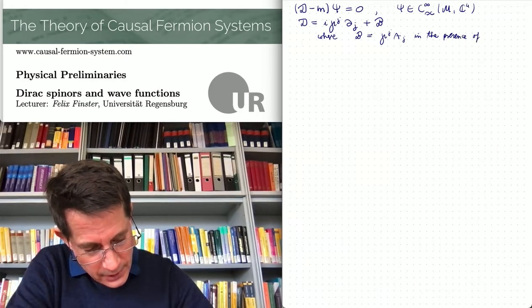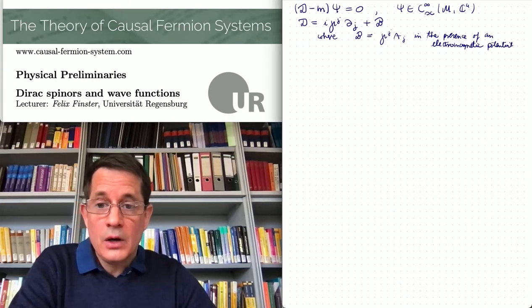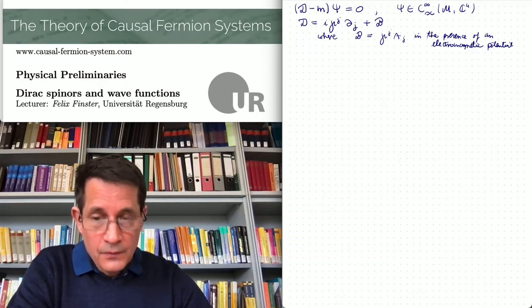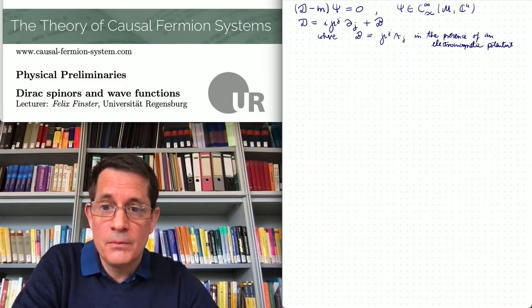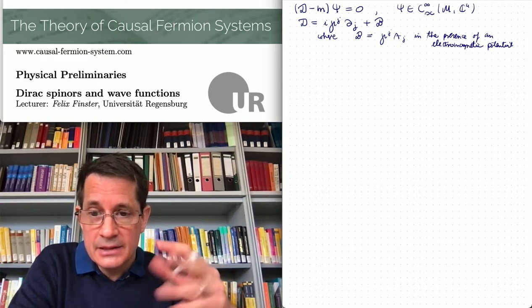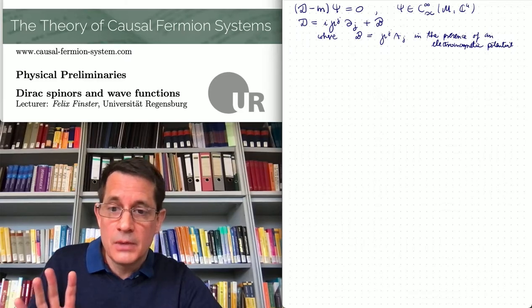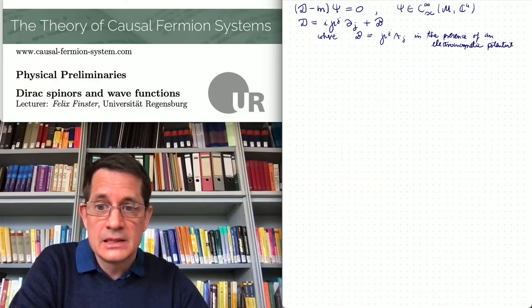Let me write this in a slightly more general form: D plus B, where B contains potentials — for example B equals gamma^j A_j if one considers the Dirac equation in the presence of an external electromagnetic potential. Now for a mathematician the formulation here is not quite convincing, since we are working with four-component complex wave functions, but this depends on the choice of bases. It is better to replace C^4 by an abstract vector space.